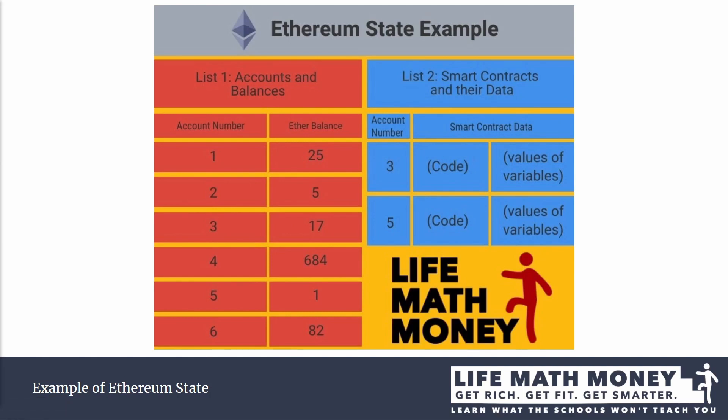One thing to note is that smart contract accounts do not have a private key. They run purely on the basis of their code. For example, if the code says send 10 Ether to account two, then it will send 10 Ether to account two. If there is no code that says send Ether to someone else, then it will just keep taking Ether but won't send it to anyone — in other words, the Ether will be wasted.